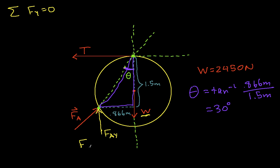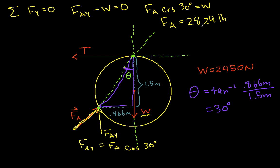We can say that FAY minus W is equal to 0, which says that FA cosine 30 degrees is equal to W. I can solve this for FA, turning out to be 2,829 pounds. So that tells me what the magnitude of FA is, it's 2,829 pounds.